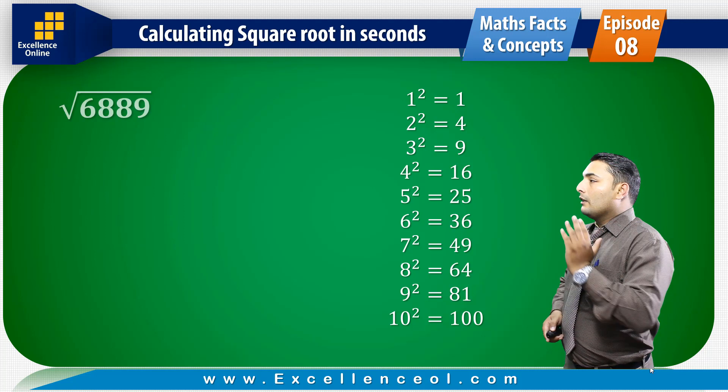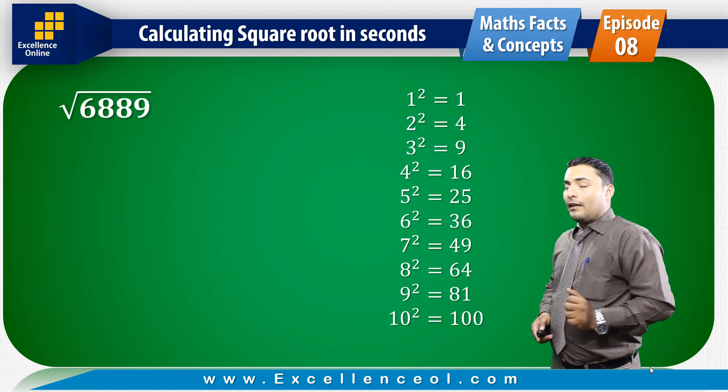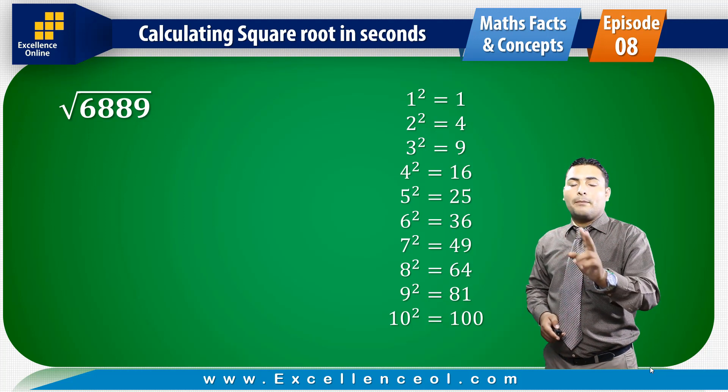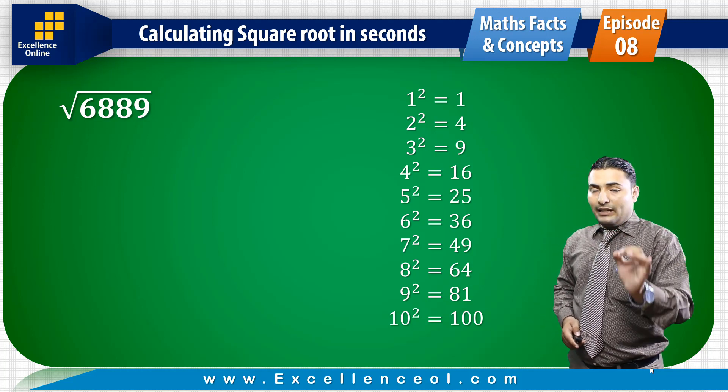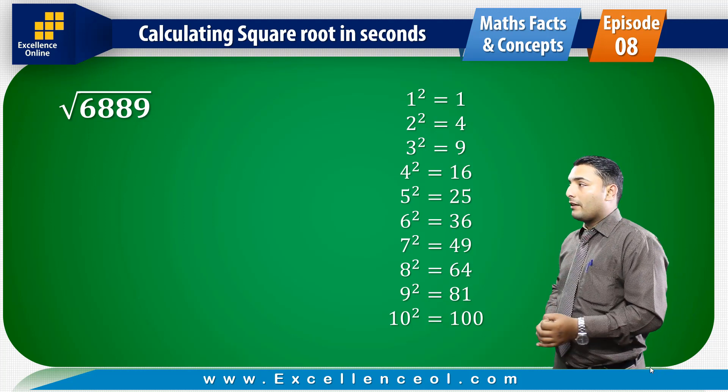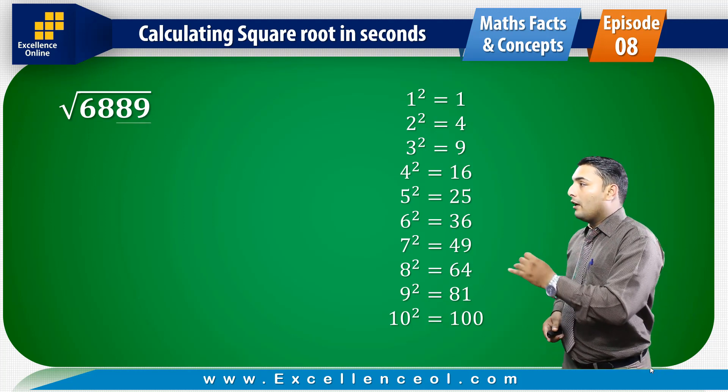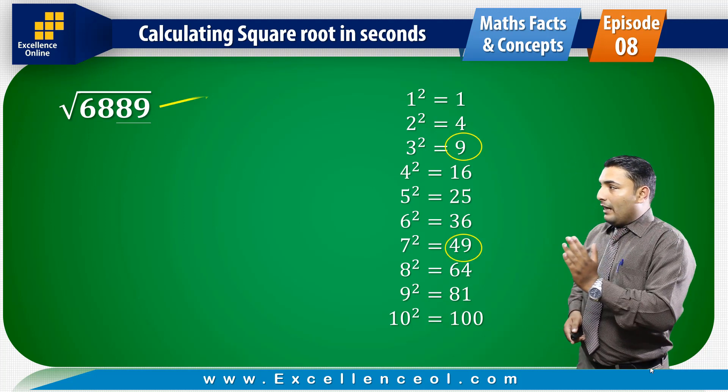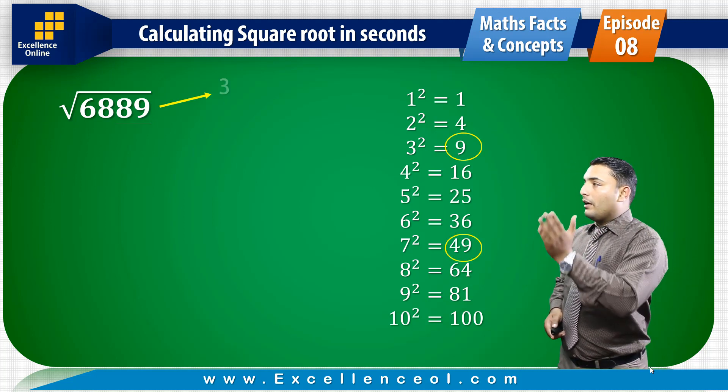Let's do another example. Suppose we have 6889. I have to find the square root. The last digits pair is 89, so the last digit is 9. 9 could come from 3 squared or 7 squared. So the last digit is either 3 or 7.